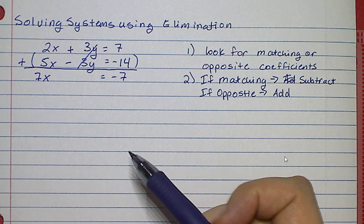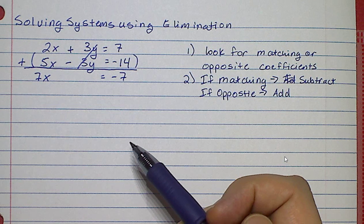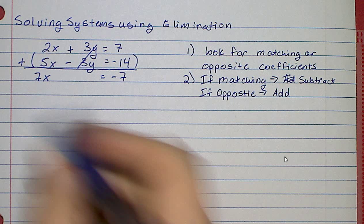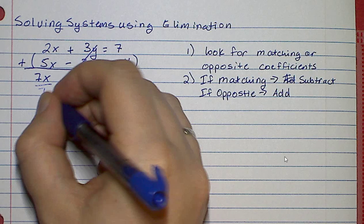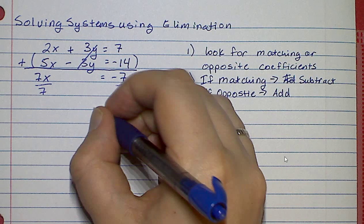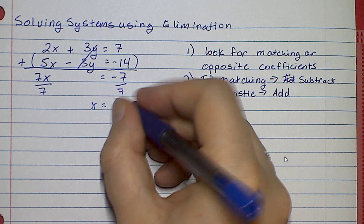And now I have this nice, neat little one-step equation to solve: 7x equals negative 7. So how would I solve this for x? I'm going to divide both sides by 7, and x is equal to negative 1.